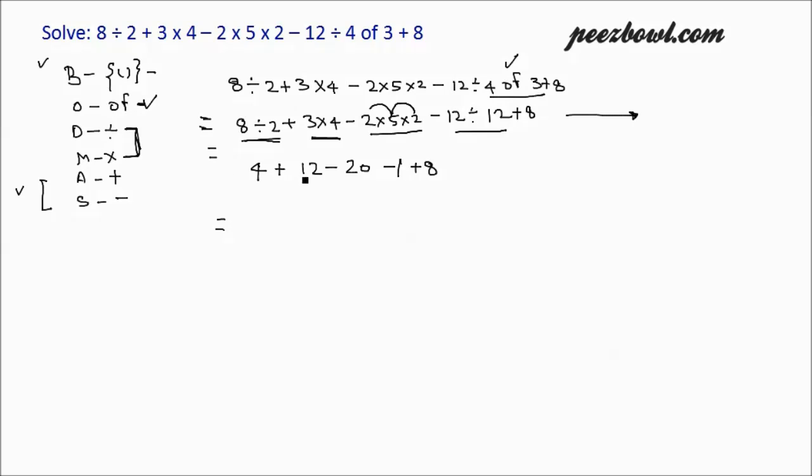Now we have plus and minus only; only these two operations we need to deal with. Plus and minus again have equal priority, so we will follow the same rule. When we have equal priority of operations, then the function will go from left to right. The operation on the left hand side will be performed first, and the operation on the right hand side will be performed later.